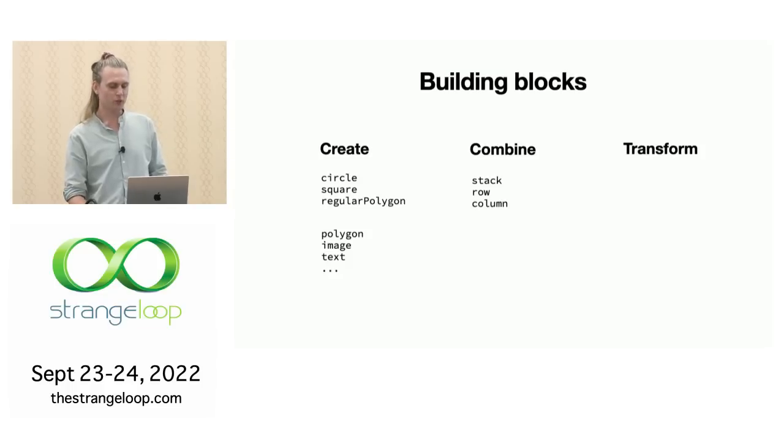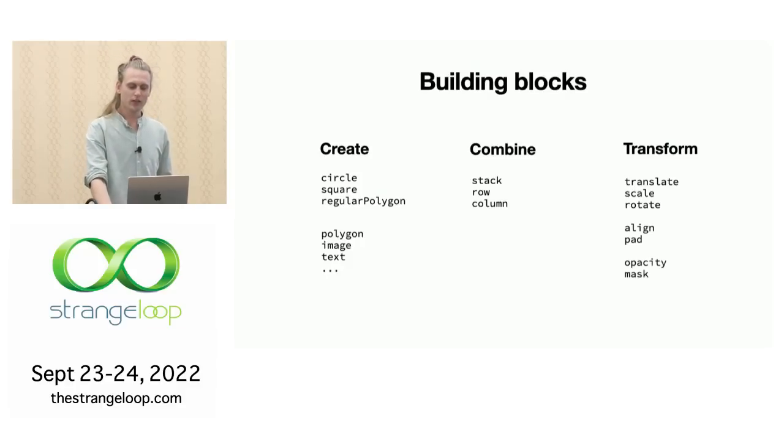And then there are ways to work with them to transform them: translating, scaling, rotating, familiar to most people. There's also basically just these two functions in addition to row and column for doing layouts: alignment, which you saw, and then padding for adding some extra padding to things. And then there's some ways of controlling visibility: opacity and mask. And that's it. This is the core that all the diagrams you saw in my intro animation are made by just using these simple tools.